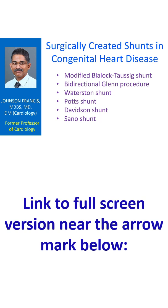The Potts shunt is also seldom done these days for similar reasons. It is a connection between the descending aorta and the left pulmonary artery. The Davidson shunt, which is also called a central shunt, involves a prosthetic graft material inserted between the ascending aorta and the main pulmonary artery. This shunt is usually performed when the pulmonary arteries are hypoplastic.